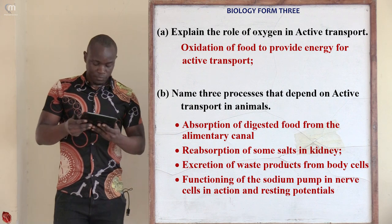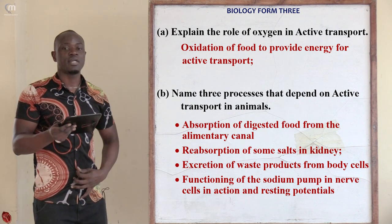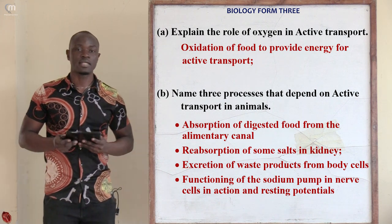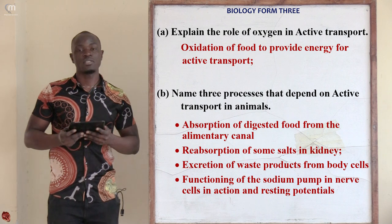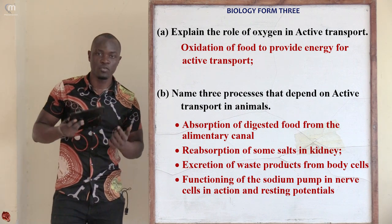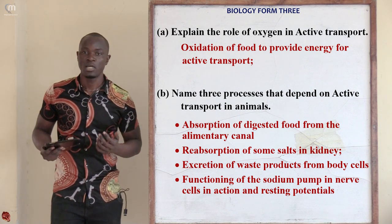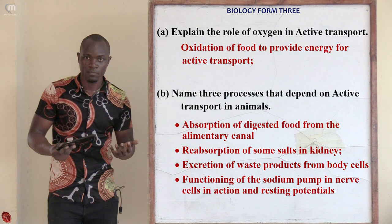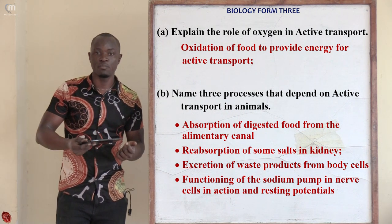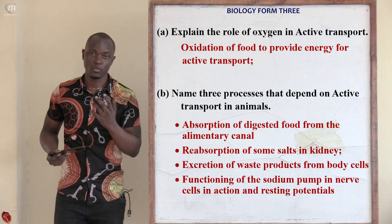Question number ten: explain the role of oxygen in active transport. Oxygen is simply used to oxidize food in order to produce energy. That is the role of oxygen in active transport — it oxidizes food, and the energy produced is used for the process of active transport.